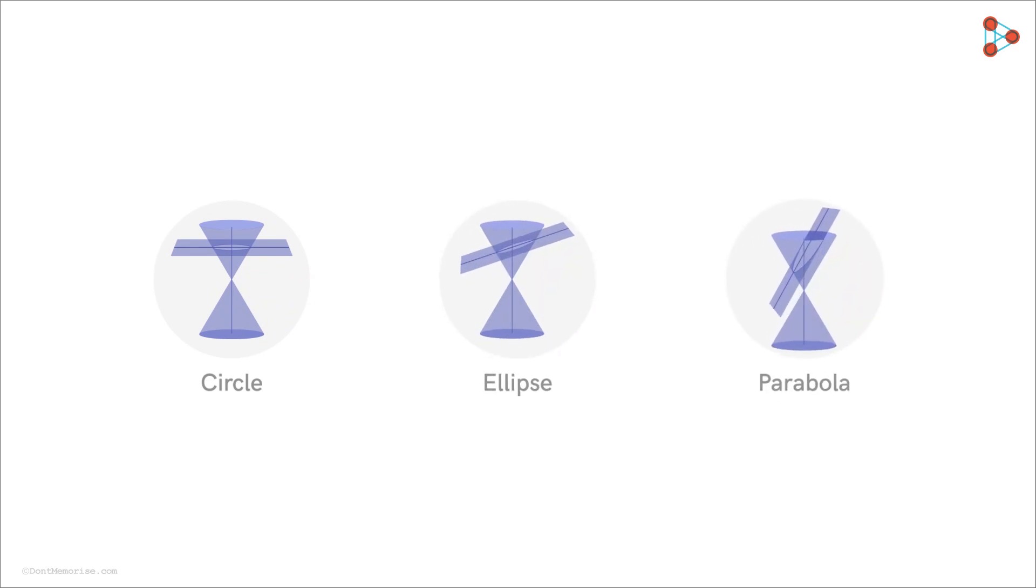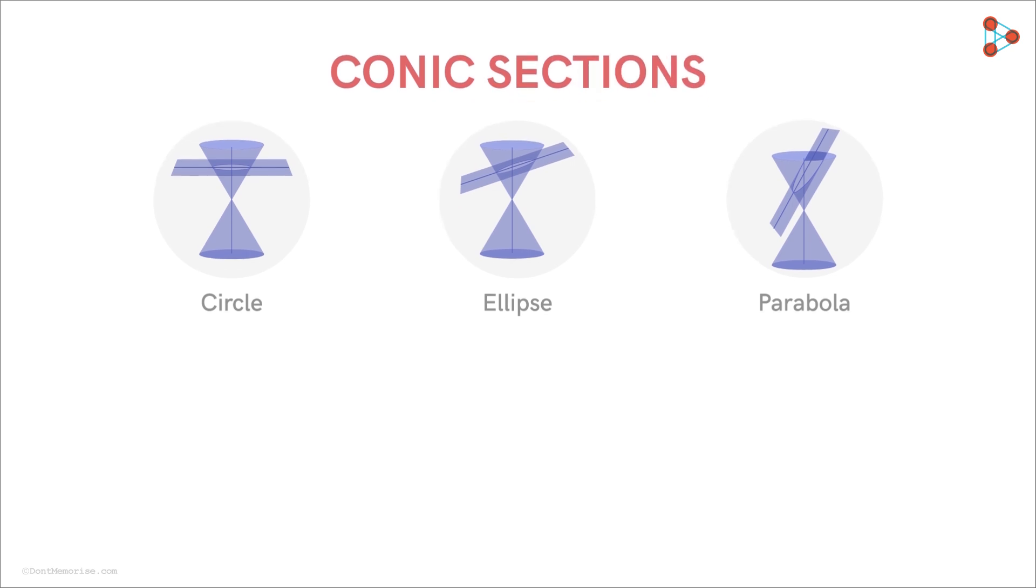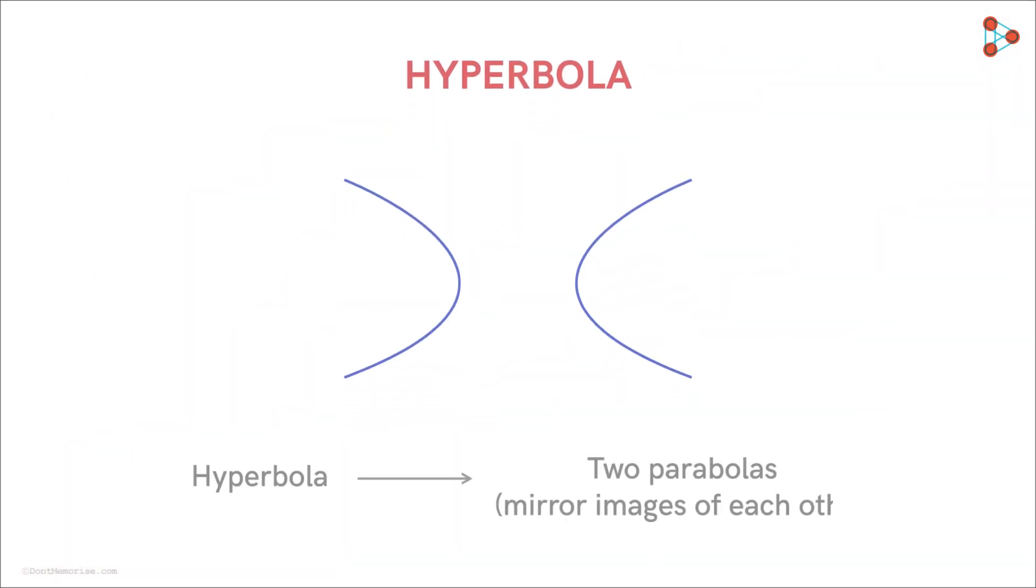Circle, Ellipse, Parabola. We saw some interesting things about these conic sections earlier. But remember there is one more conic section called the hyperbola. It looks like two parabolas which are mirror images of each other, but that's not the case. A hyperbola is very different from a parabola.